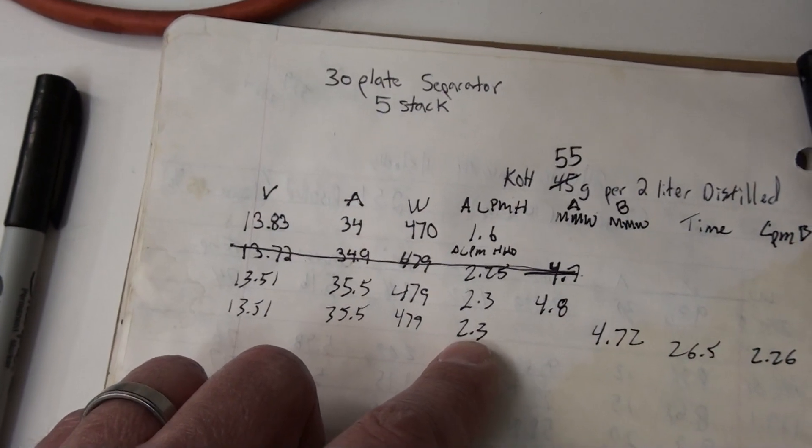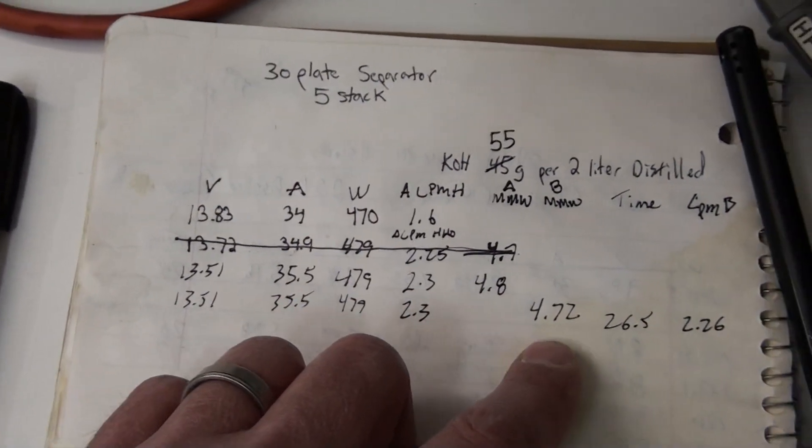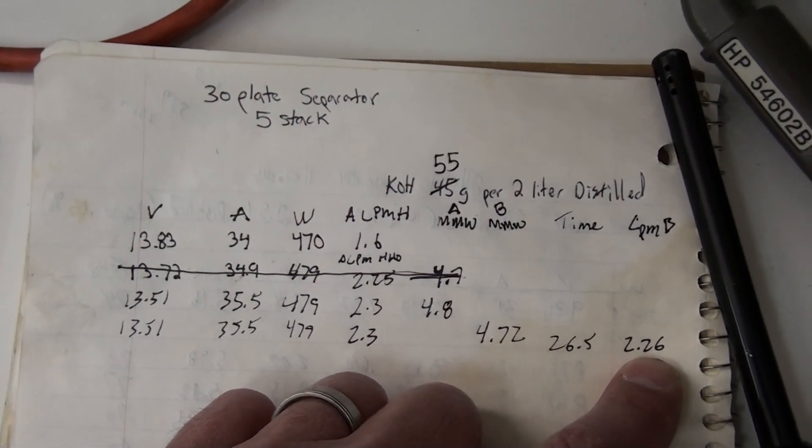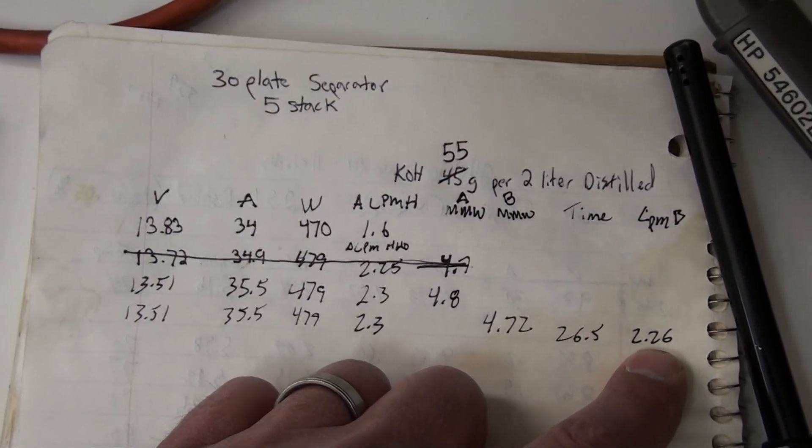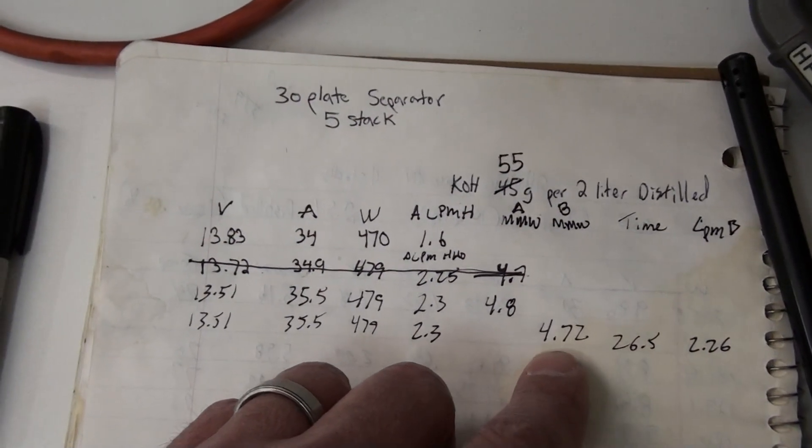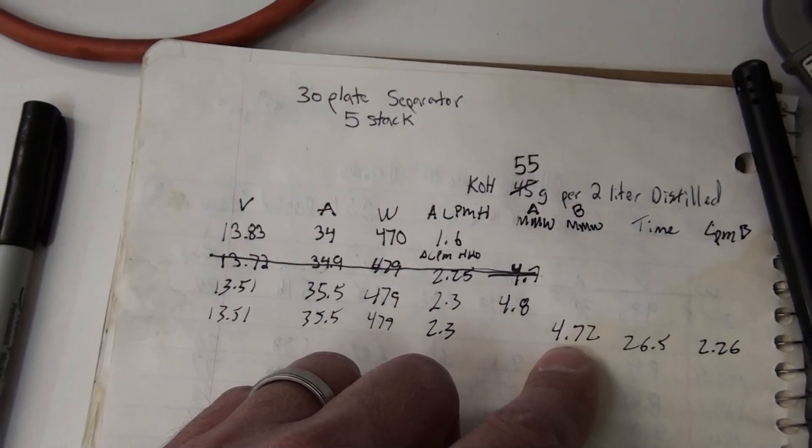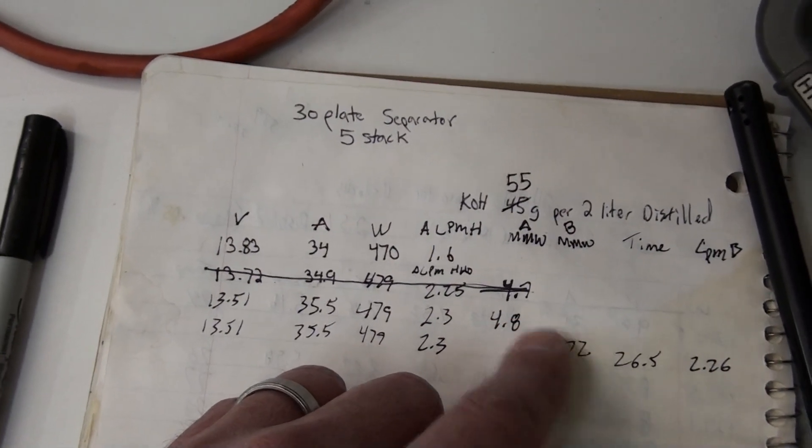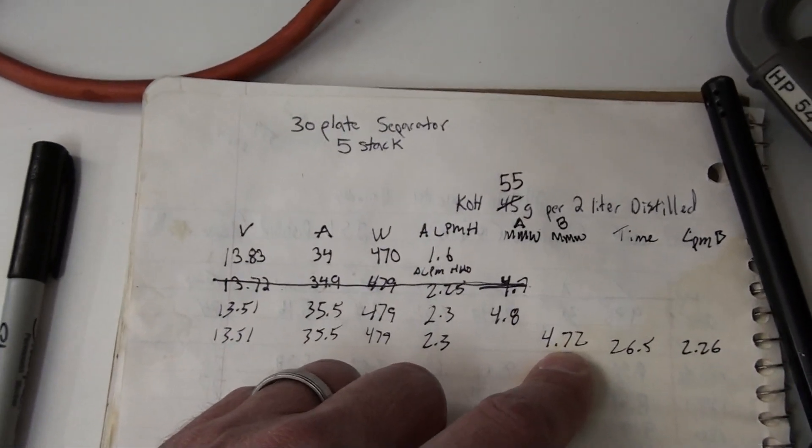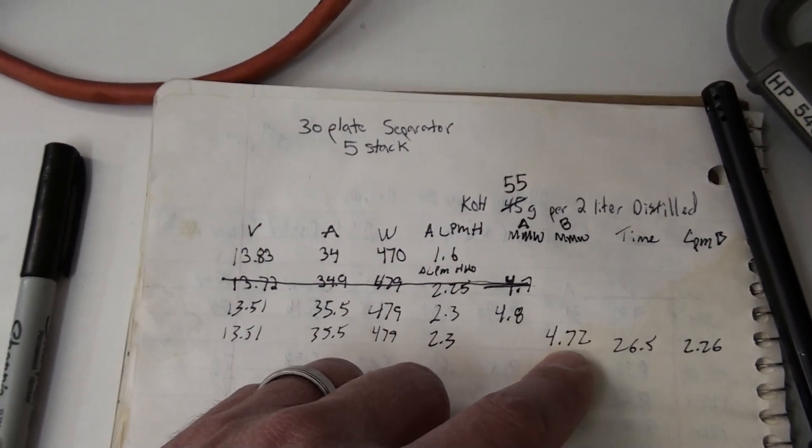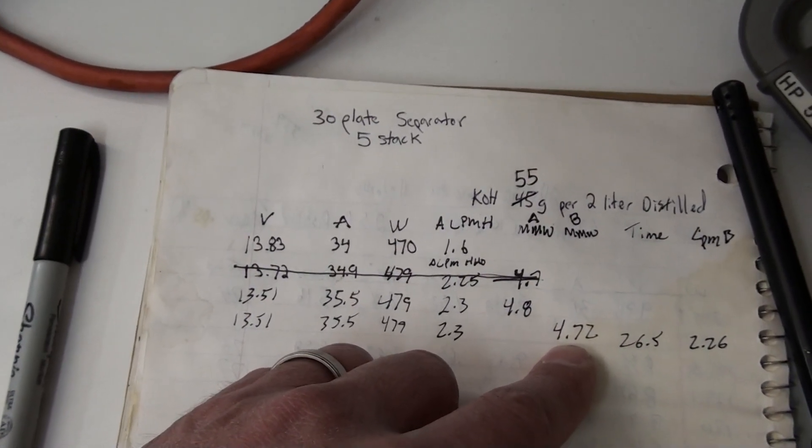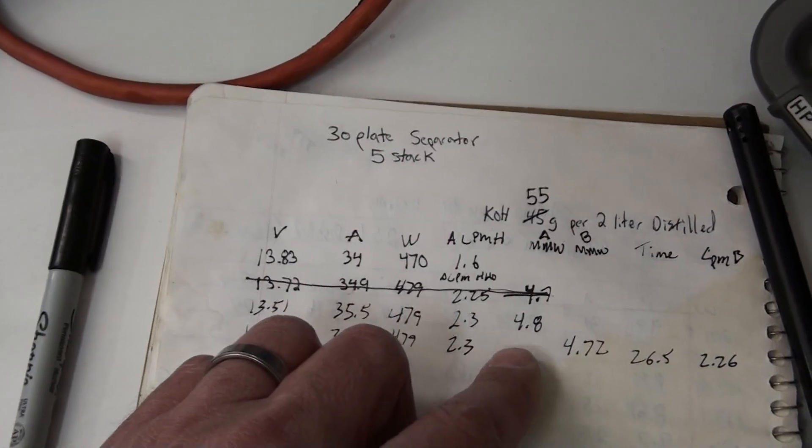So I did the same test right in a row, the AlleyCat said 2.3 and then with my bottle I measured 2.26 so really close in 26 seconds. So I calculated the MMW at 4.72, so these two readings are really close, which is encouraging, which means that probably for the most part, everything that I've been reporting on my website and through the videos is pretty close to being correct.